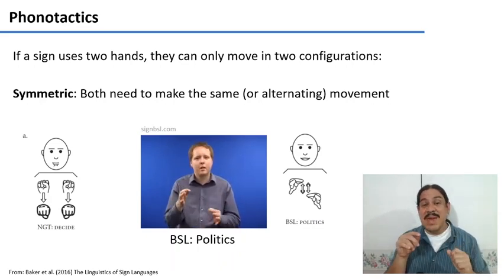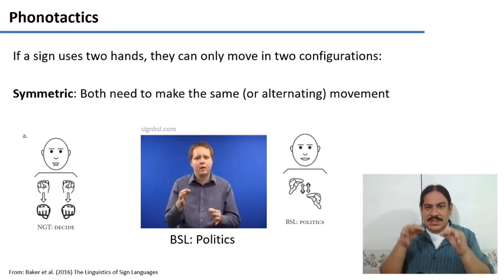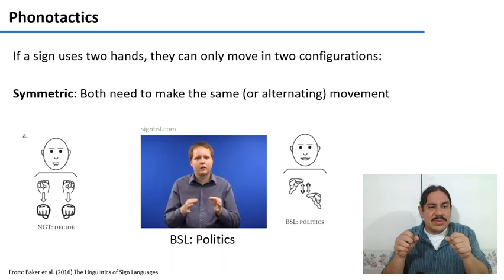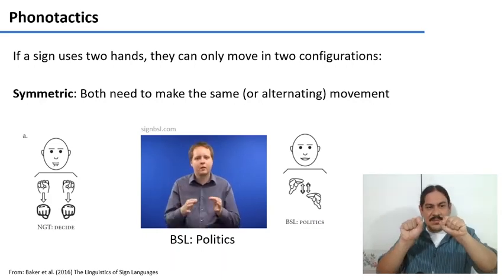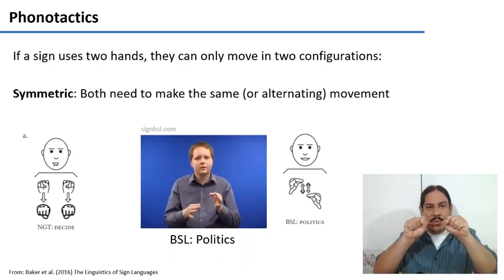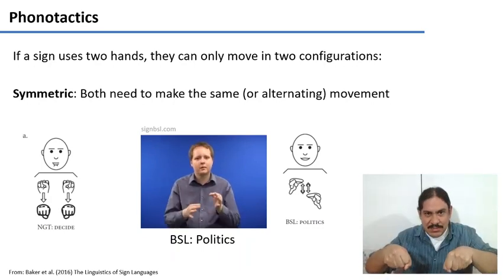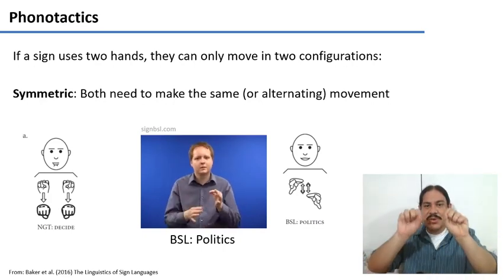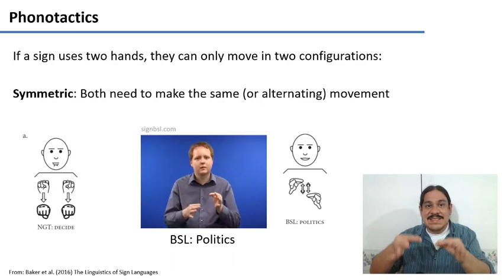The first one is for the hands to be symmetric. This is the British sign language word for politics. The movements are alternating, but the hand shapes are the same. Notice also in the example from Dutch, the sign language, like this. The hand shapes are the same for both hands, and the motion is the same. So you need to have your hands in a symmetric configuration. Both hands need to be doing the same shape.